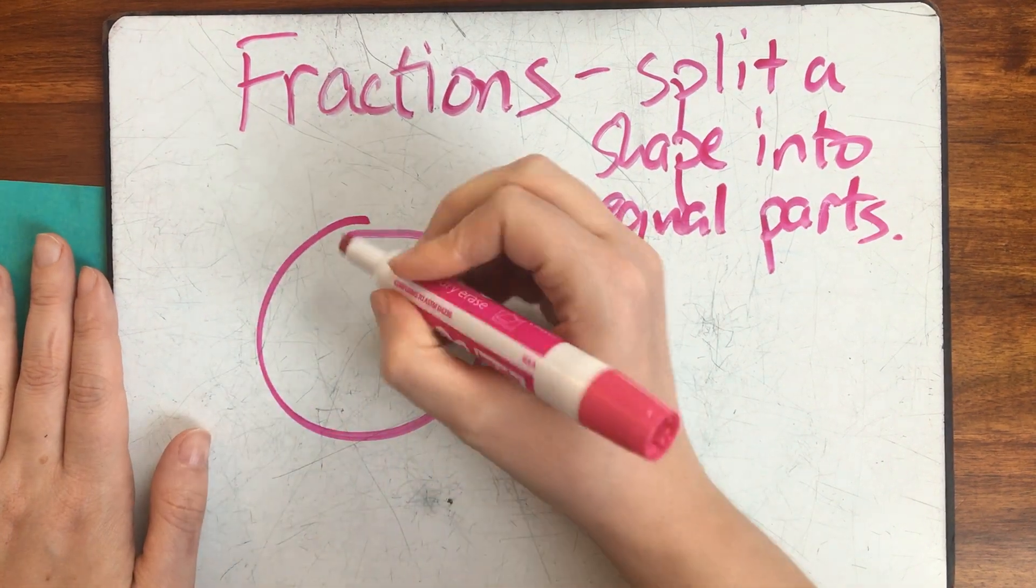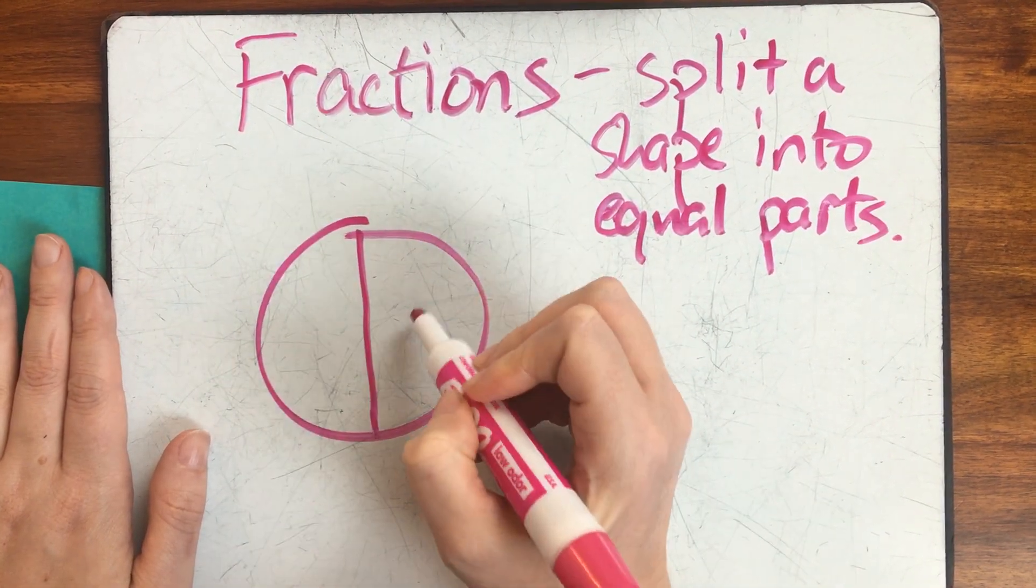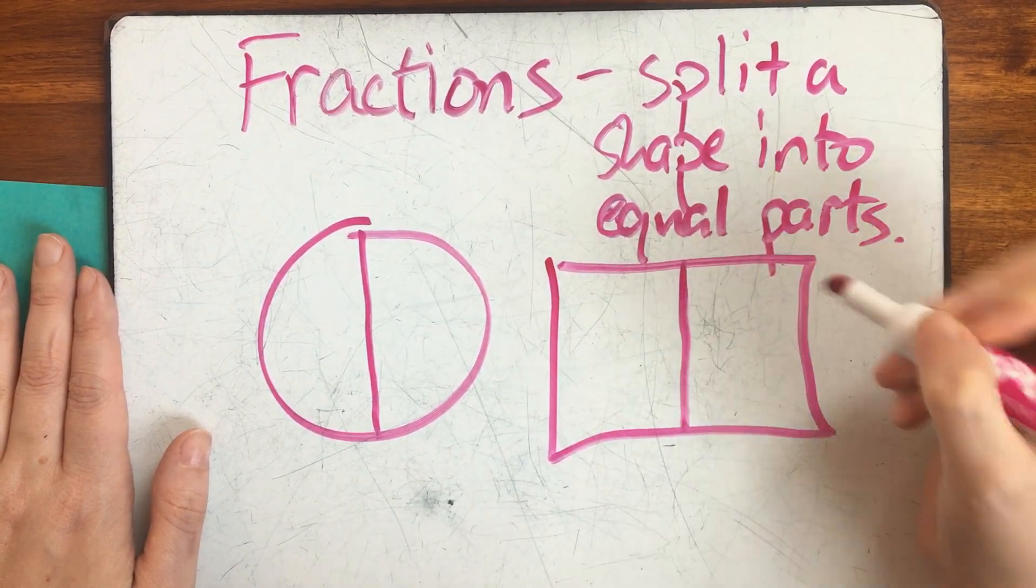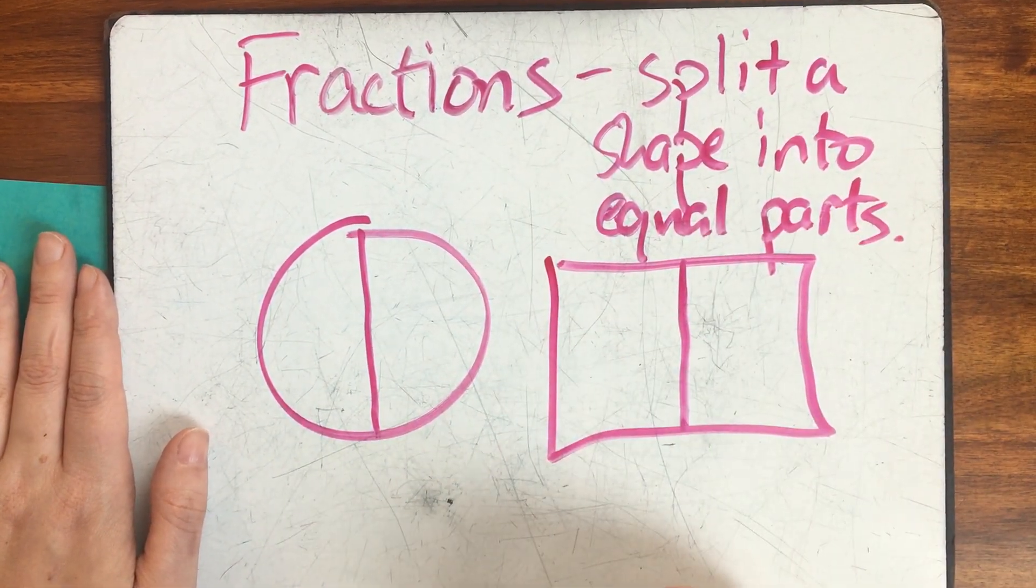I could split this circle into equal parts. One, two, two equal parts. I can split this rectangle into equal parts as well. One, two, two equal parts.